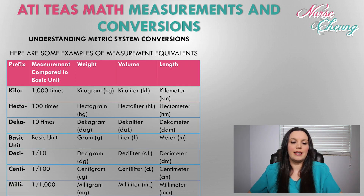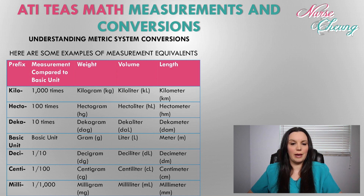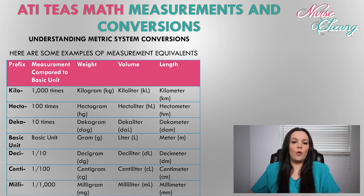Looking at the table, on the fourth row down from the bottom we have our basic units: grams, liters, and meters. The prefixes tell us if a value is more than or less than the basic unit. Kilo is a thousand times greater, hecto is a hundred times greater, deca is ten times greater. Desi is one tenth less than the basic unit, senti is one one-hundredth less, and milli is one one-thousandth less than the basic unit.